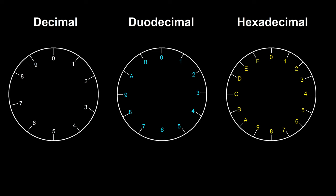To divide a circle up into tenths you have to divide it in half then divide each half into 5. To divide a circle into twelfths you can divide it in half, then divide each half in half again, then divide each quarter into 3. To divide a circle into sixteenths you can divide it in half, then each half in half again, then each quarter in half again, then each eighth in half again.